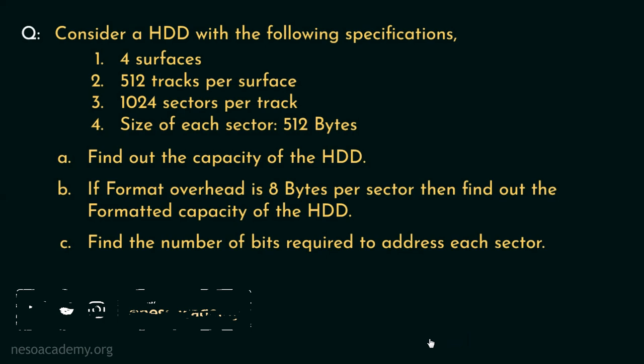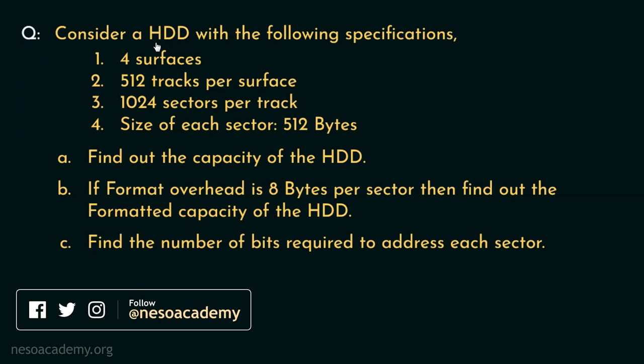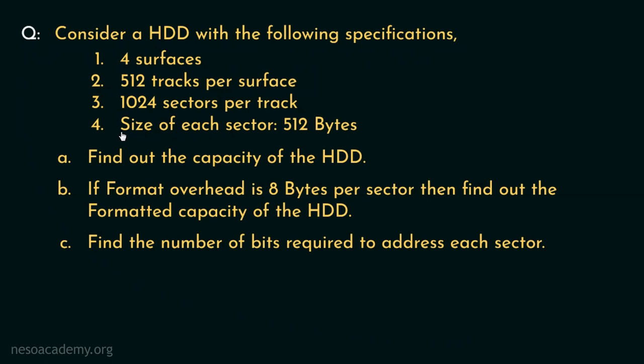Observe this question. Consider a HDD — HDD is the acronym of hard disk drive — with the following specifications: 4 surfaces, 512 tracks per surface (meaning all 4 surfaces have 512 tracks each), then 1024 sectors per track, and finally the size of each sector is 512 bytes. These are the specifications of the hard disk drive. Now observe, there are 3 linked questions and we will solve these one by one.